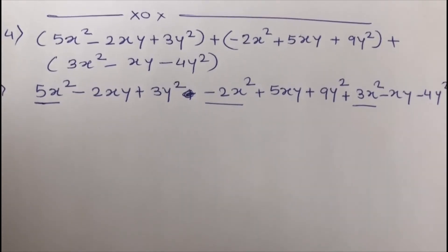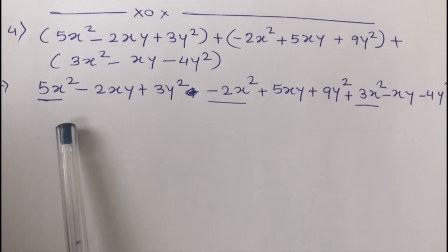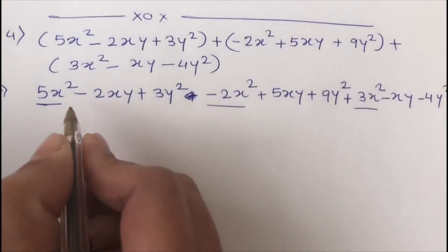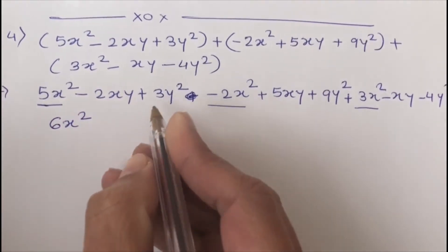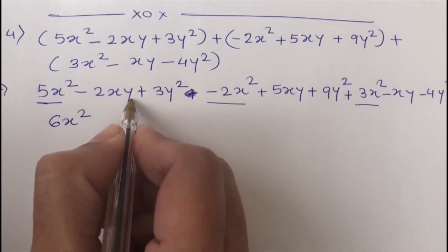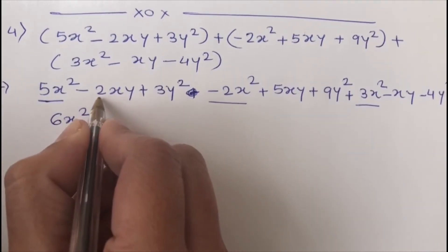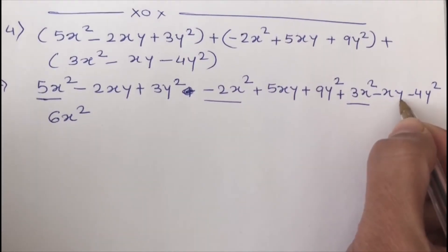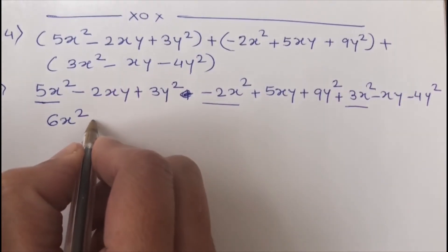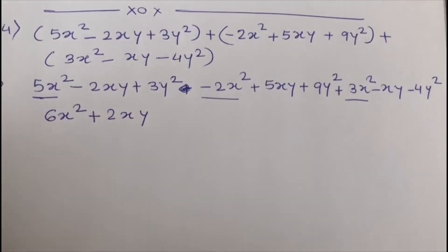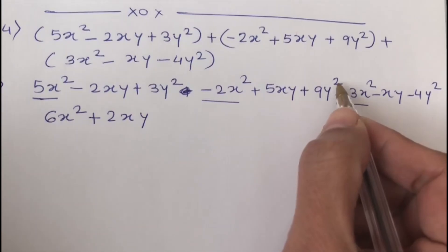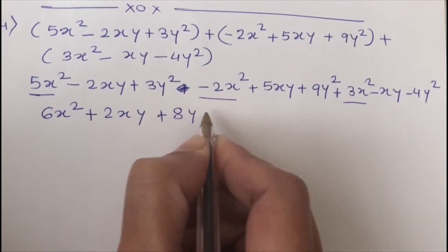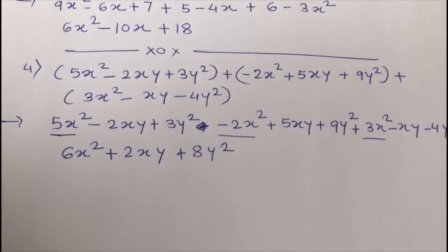For the x squared terms: plus 5 minus 2 plus 3 equals 6, so we have 6x squared. For the xy terms: minus 2xy plus 5xy gives plus 3xy, and plus 3xy minus xy gives plus 2xy, so we write plus 2xy. For the y squared terms: 3y squared plus 9y squared is 12y squared, minus 4y squared gives 8y squared, so we write plus 8y squared.